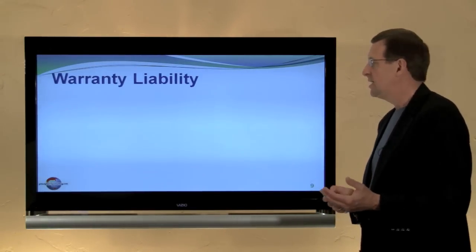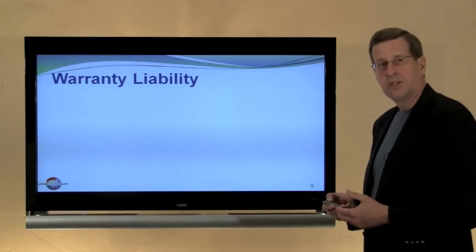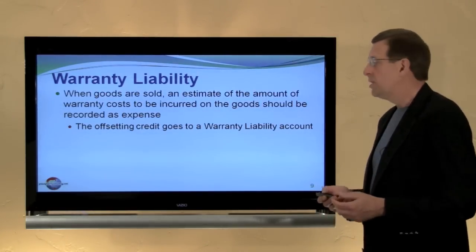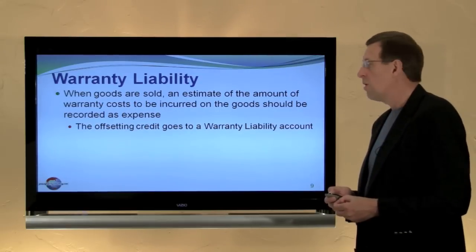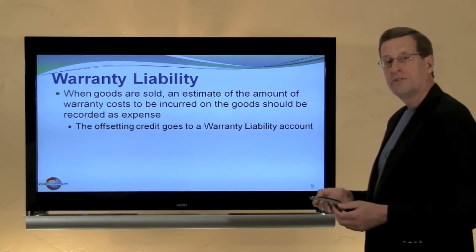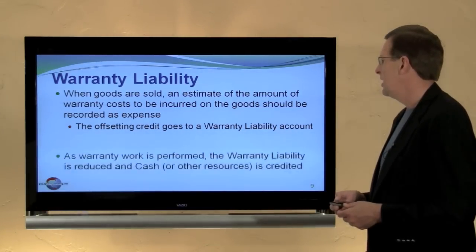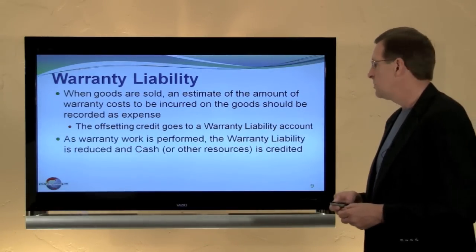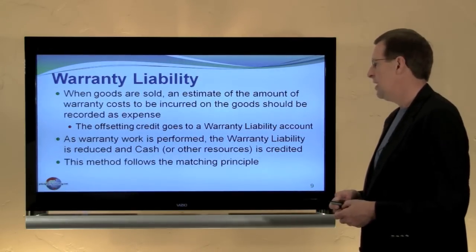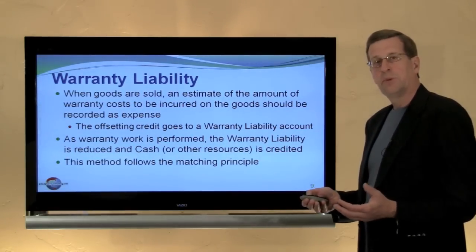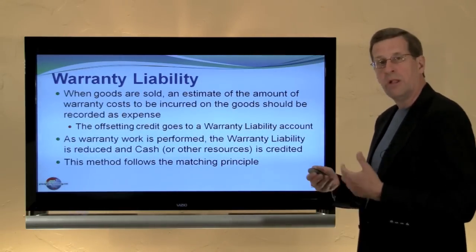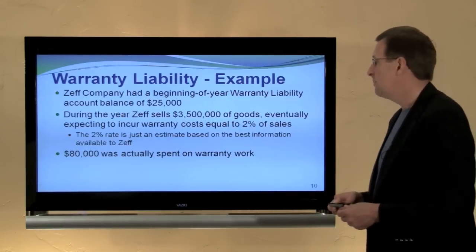Let's think about a specific case such as a warranty liability, which you might view as an estimated liability or a contingent liability. When goods are sold, an estimated amount of the warranty cost to be incurred on the goods should be recorded as an expense with an offsetting credit to a warranty liability account. As the warranty work is performed, we credit cash and debit the warranty liability account. This follows the matching principle such that we record expenses in the period of sale, even though the actual work may be done in a subsequent year.